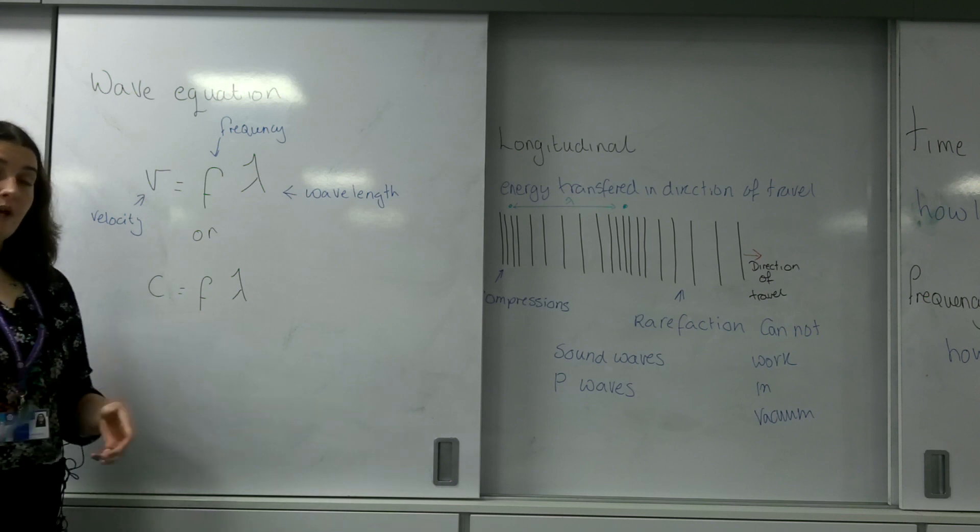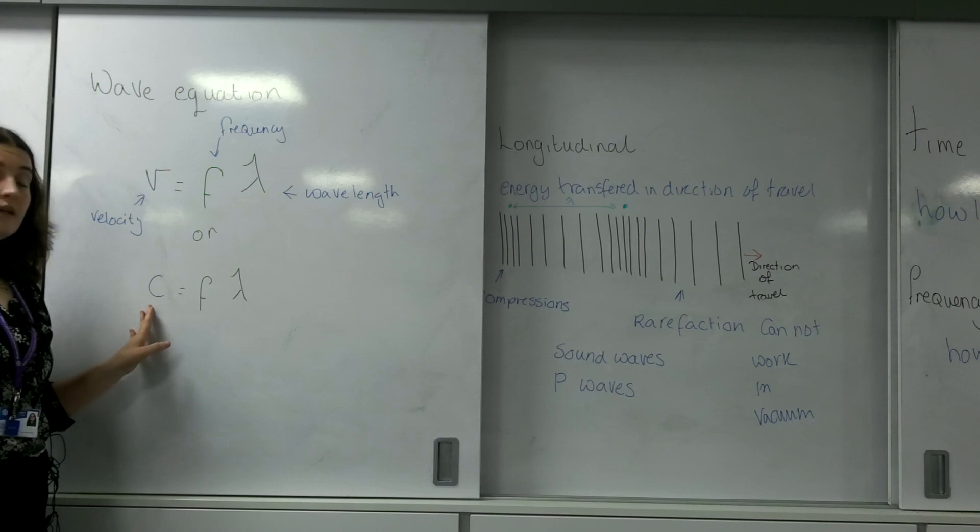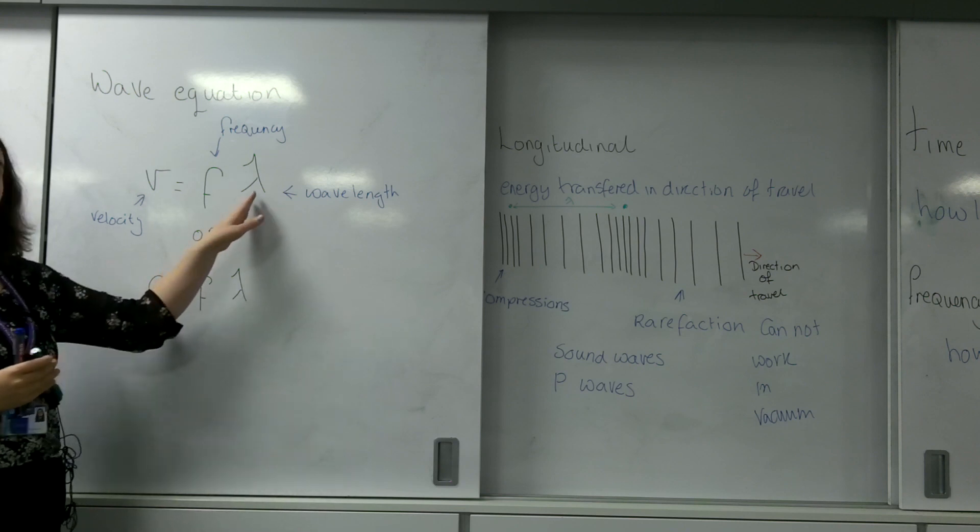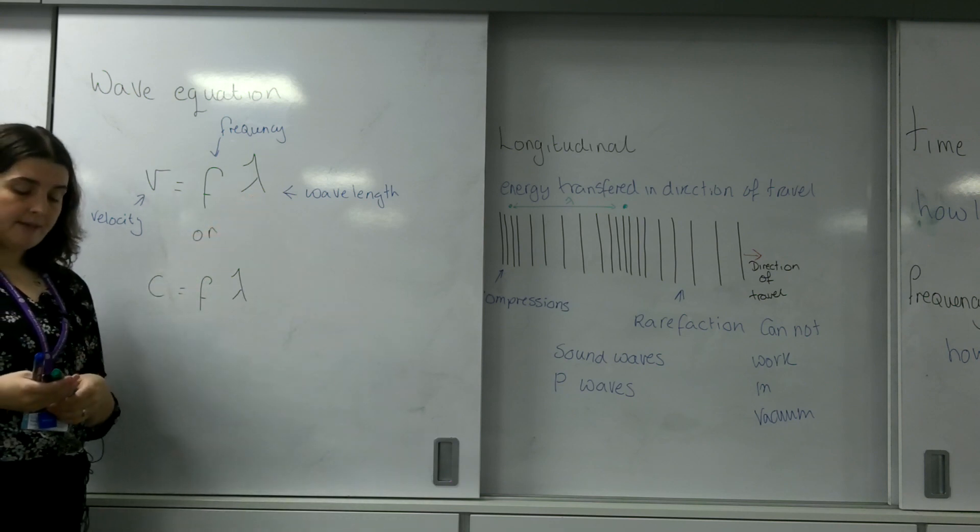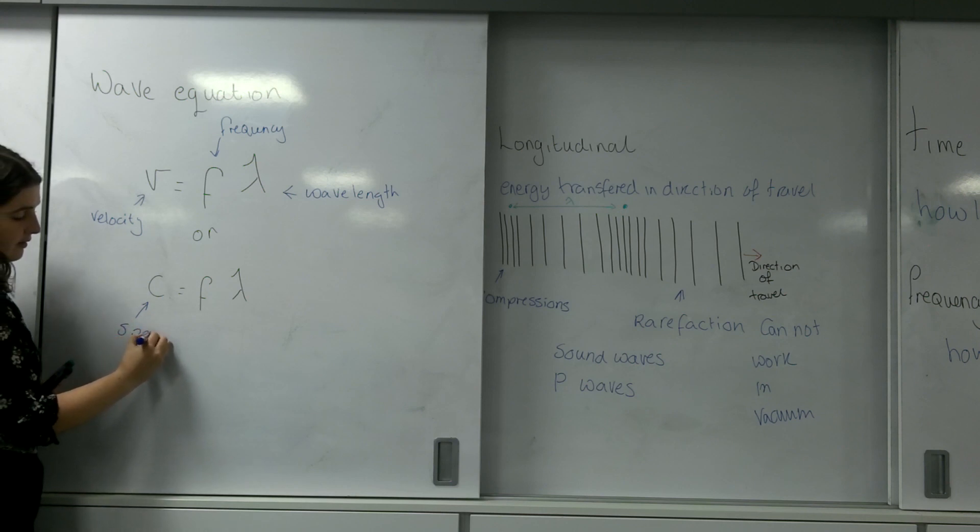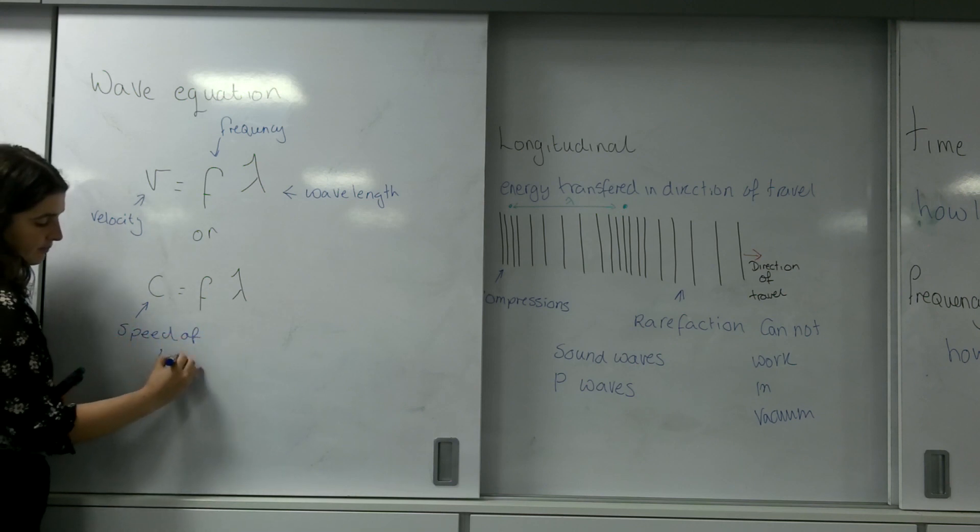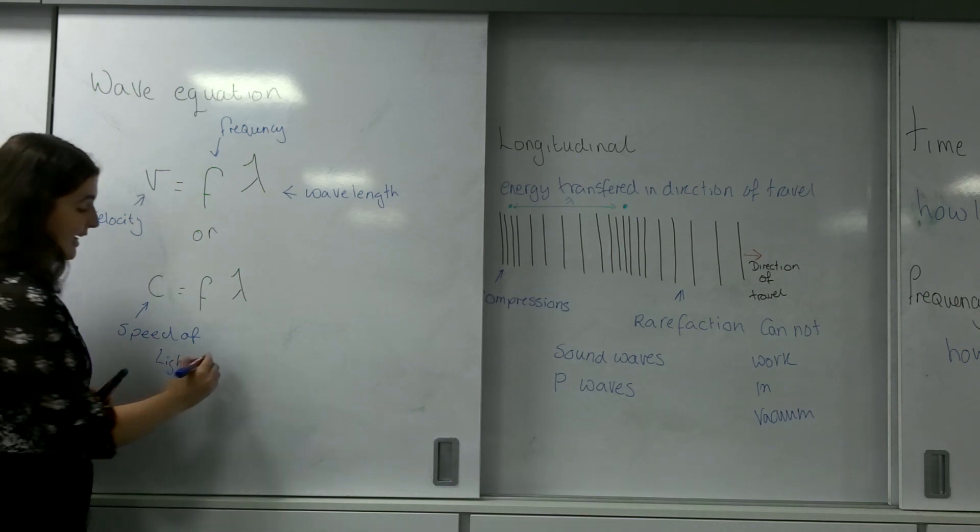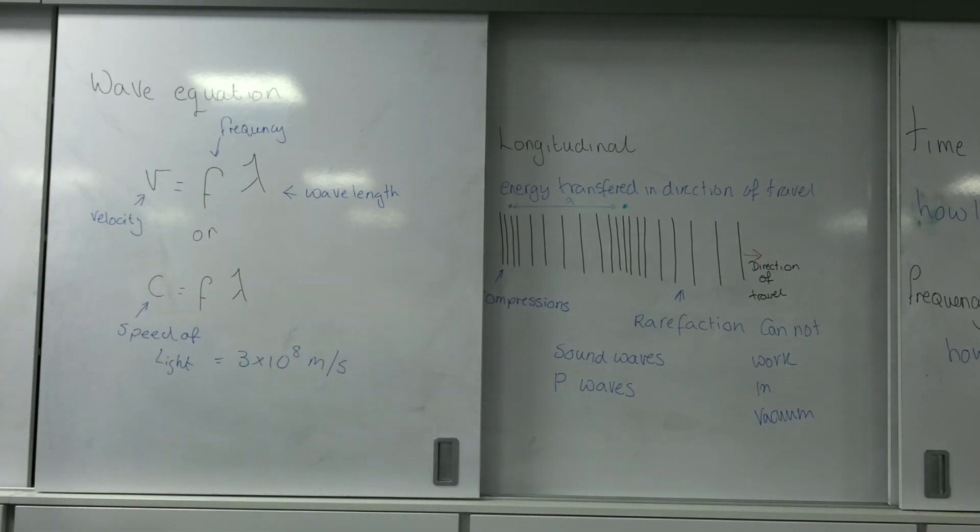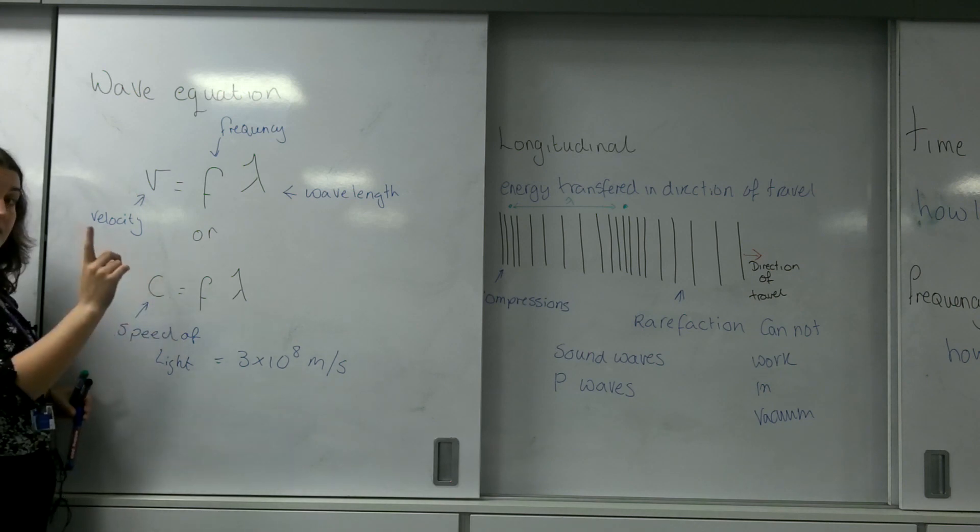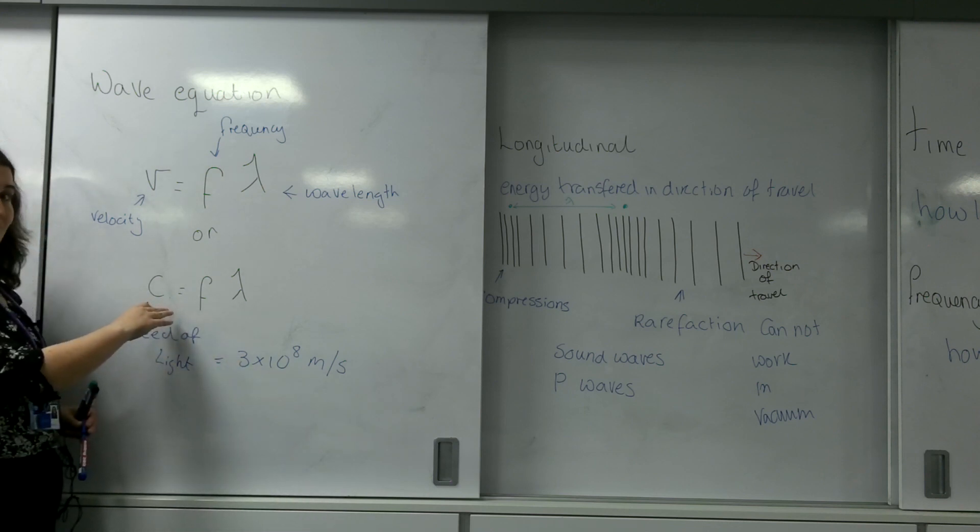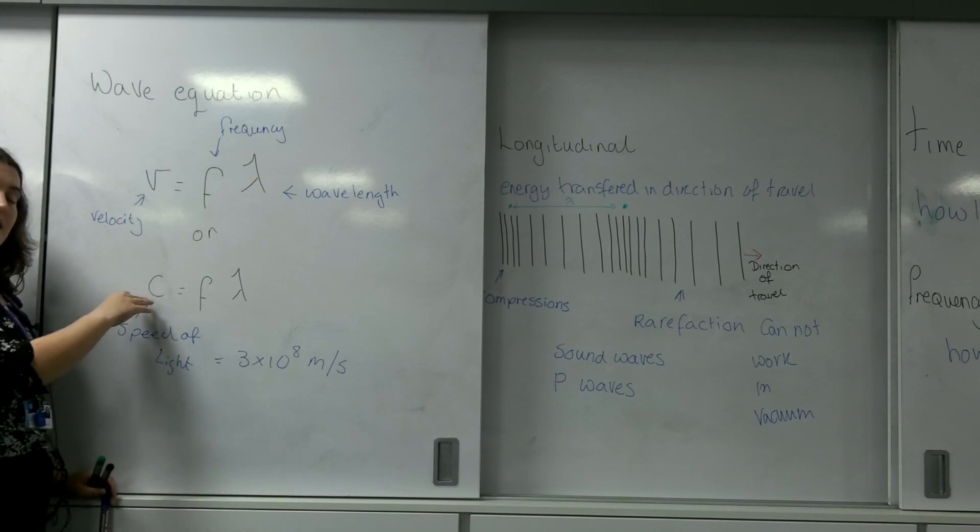The one in the AQA exam data sheet is this one here: c equals f lambda, where lambda is wavelength. The reason they're using c is because of the speed of light. The speed of light is 3 times 10 to the 8. You need to know, firstly, that 3 times 10 to the 8 is the speed of light. It is on the data sheet. And also that when they put c equals f lambda, they're using c in place of the speed of light.